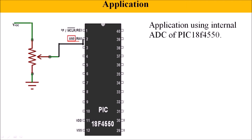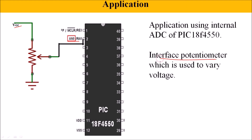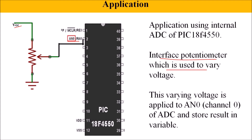Now a simple program for ADC application: a potentiometer is connected at channel 0 (AN0), with one terminal to VCC and the other to ground. By varying the potentiometer, we can vary the analog voltage applied to AN0, which is connected to the RA0 pin of the PIC microcontroller. The program will read this varying voltage, convert it to digital, and store the result in a variable. We can modify the program to display the result on an LCD or LED, which will be done in the next lecture.